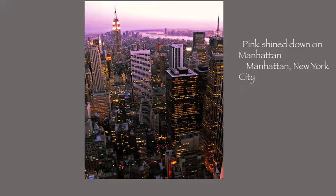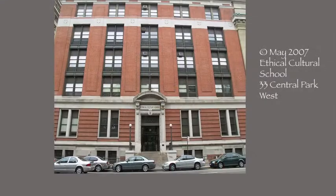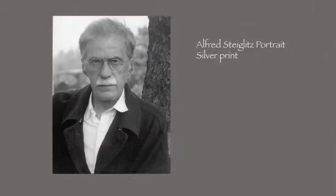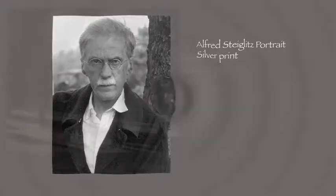He was born in Manhattan, New York City on October 16, 1890. As a child, he went to the Ethical Cultural School in New York City. His first camera use was a large format camera. Also, growing up, his teacher Alfred Stieglitz became a person who Paul Strand studied with throughout his career.